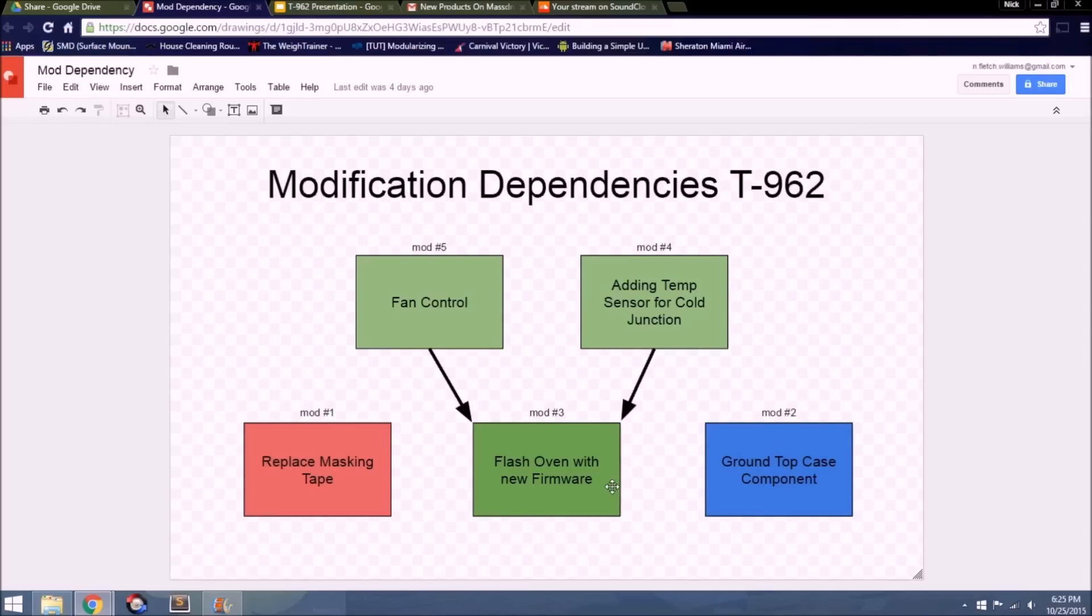As you can see, replacing the masking tape and also grounding the top case component of the oven are completely separate and can be done independently from the other modifications. There's nothing else that depends on doing these modifications. However, these three ones are joined together. The firmware flashing modification is necessary for the cold junction sensor and also the fan control modification.